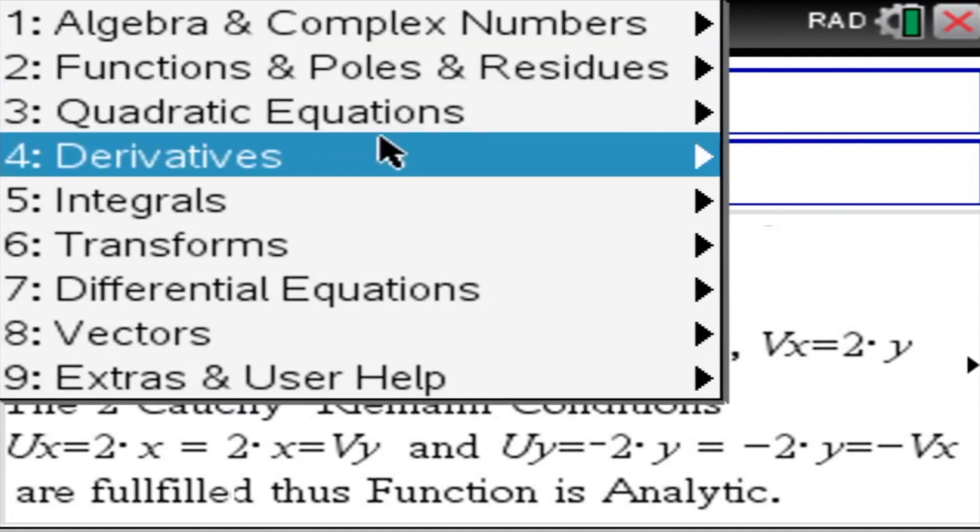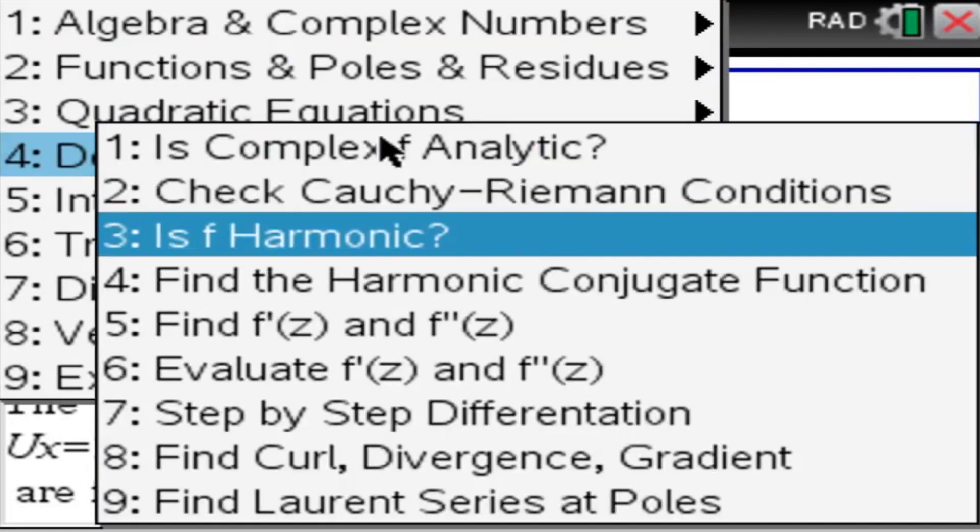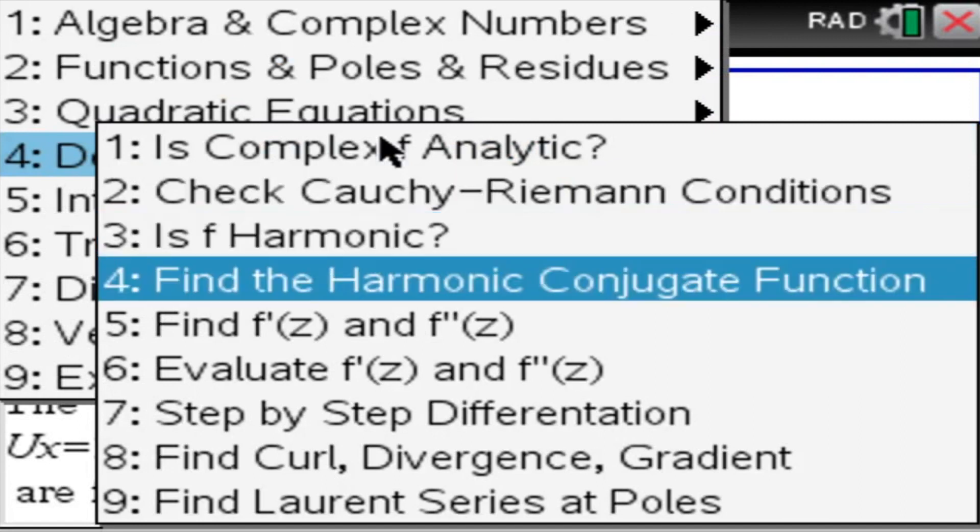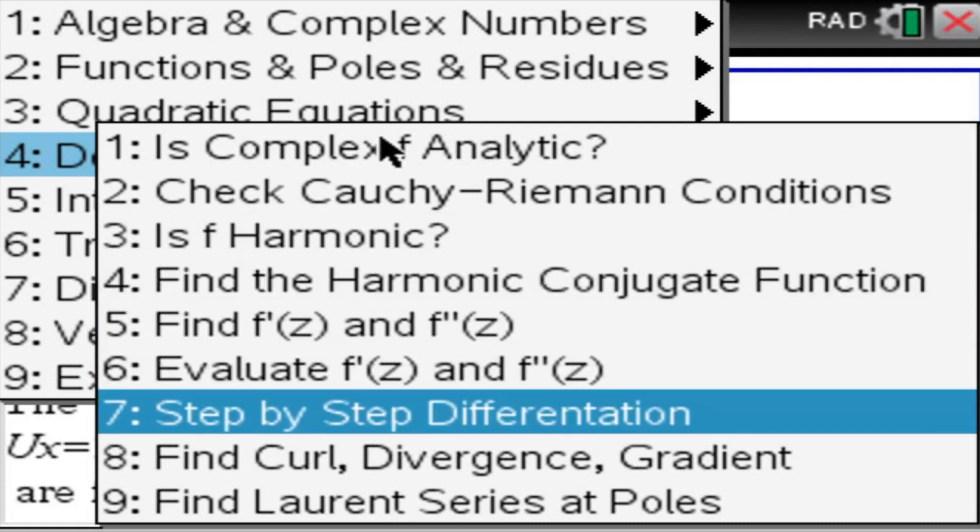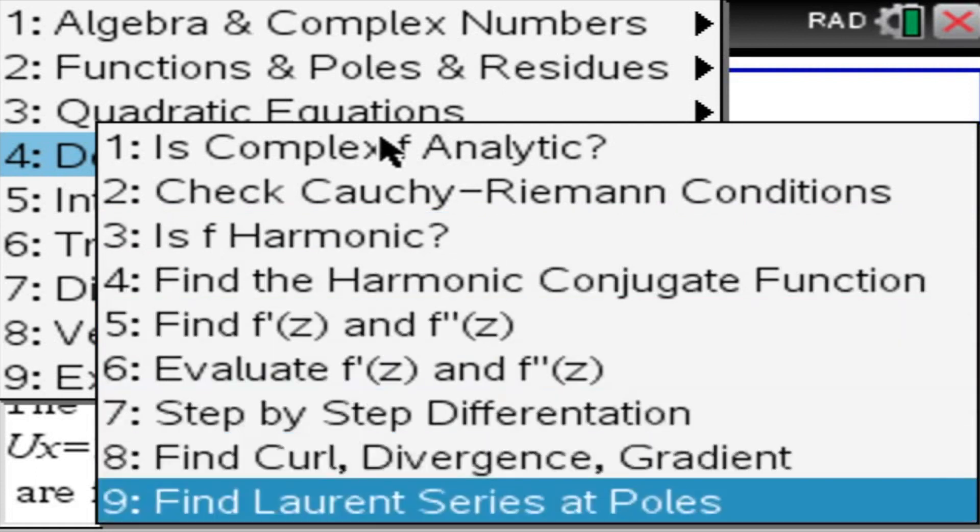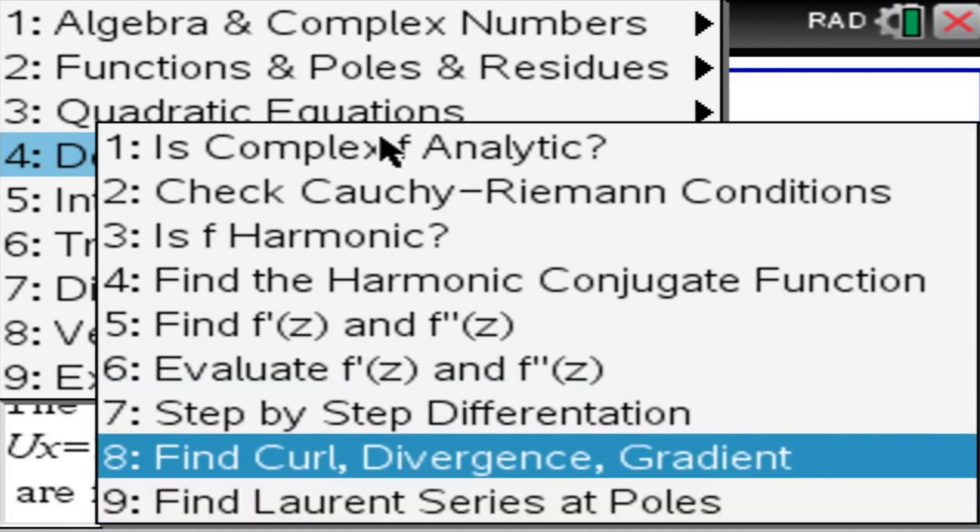Moving right along. We can check if a function is harmonic. We find the harmonic conjugate function using this app. We find derivatives and evaluate derivatives. We can do step-by-step differentiation. Find the Laurent series at given poles and curl divergence gradient. I recommend to use the trial version if you want to play around some more with the functionalities.